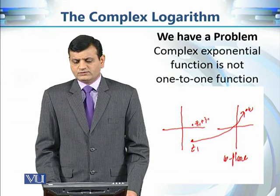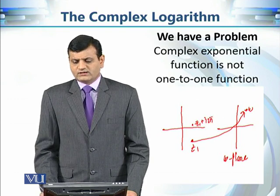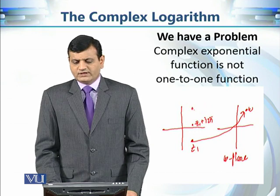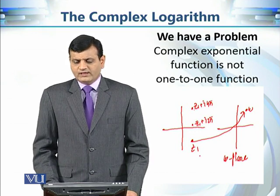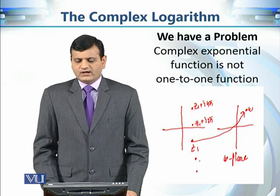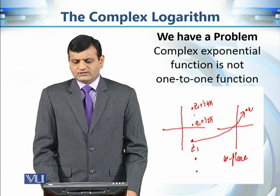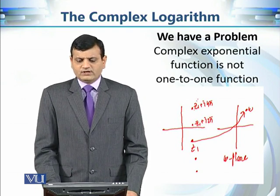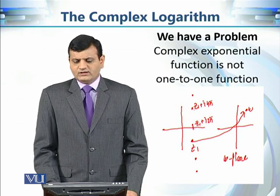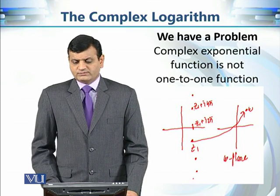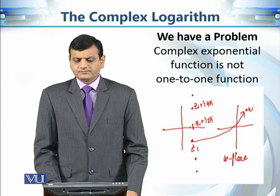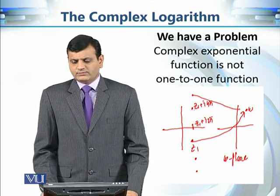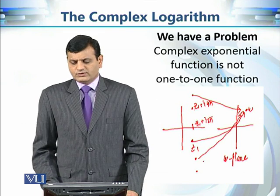From our knowledge of complex exponential functions, if we take another point z₁ + 2πi, its image is exactly the same point w. If we take z₁ + 4πi, its image is again the same w. Whenever there is a difference of 2πi between two complex numbers, their images are the same. So infinitely many complex numbers — differing by multiples of 2πi — all map to the same point w.